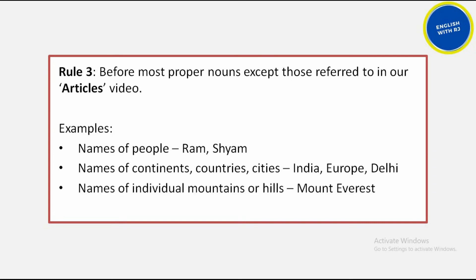For individual mountains or hills, like Mount Everest, no article is used. But for mountain ranges, like the Himalayas, the article 'the' comes. For individual islands or lakes, no article is used, but for groups of islands, like the Maldives or the Andamans, 'the' is used. If there is any confusion, please refer back to the video lesson on articles and it will become clear with practice.